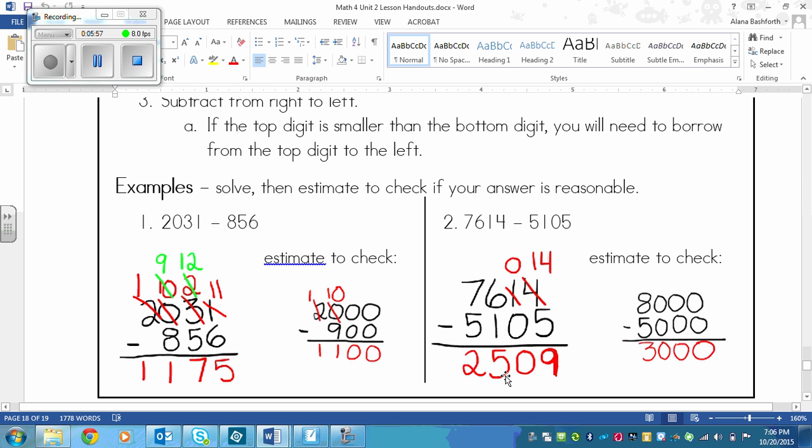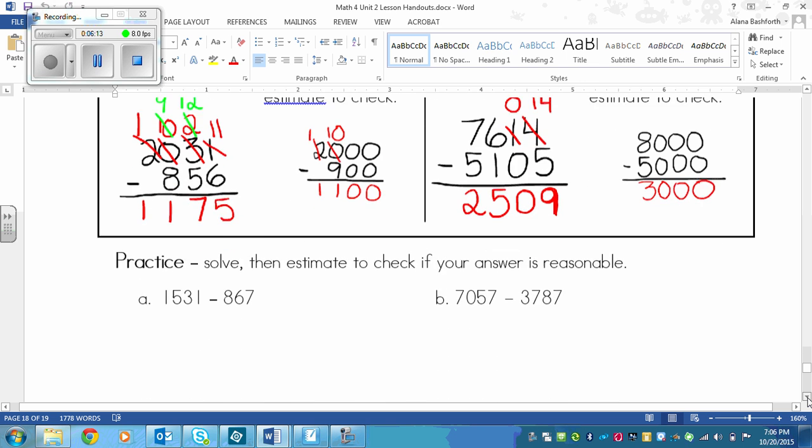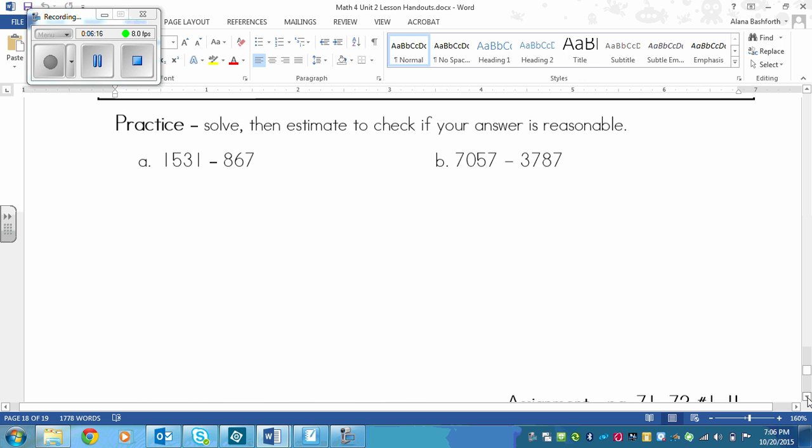Because we rounded so much, it's not going to be exact. But if we rounded this to the nearest 1,000, the 5 would raise the score of the 2 and it would be 3,000. So that's how we can tell that it is a reasonable answer. And then on the bottom here, you've got to practice. So it says solve, then estimate to check if your answer is reasonable. So again, you're doing the same thing as we did above. Solving and then also estimating. So pause the video right now and do question A and B. And then play once you're ready to see if you've got the right answer.